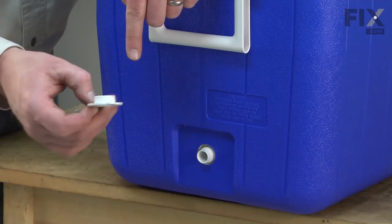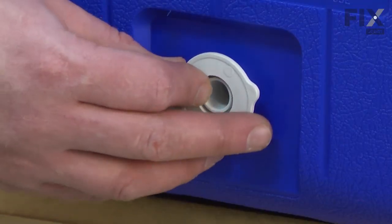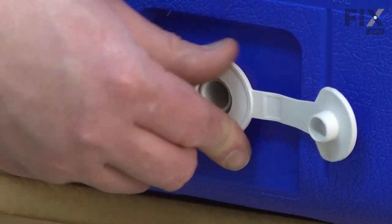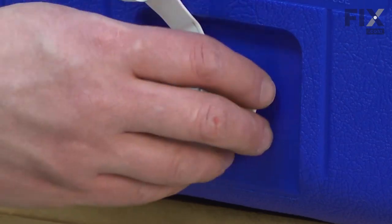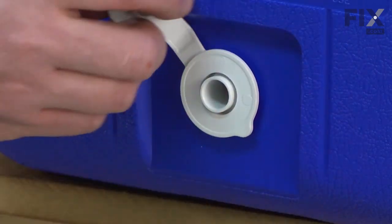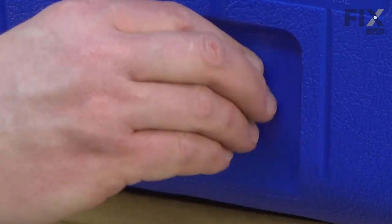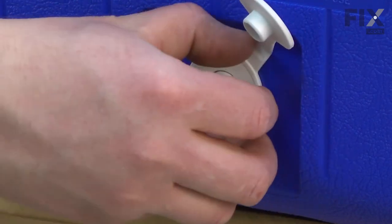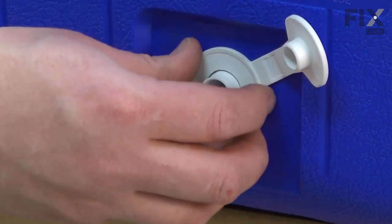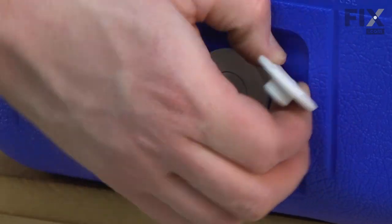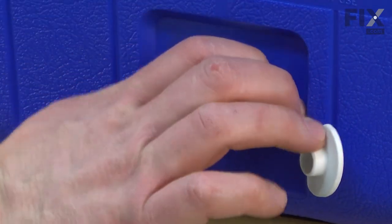This flange needs to go against the cooler and this just screws into place. It doesn't need to be super tight. I just want it tight enough so that grommet seals tightly against the cooler so it doesn't leak.